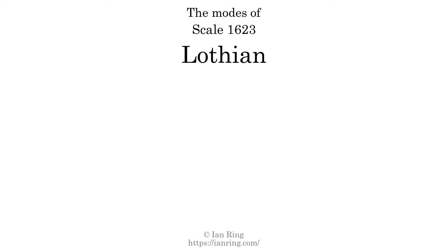Here is a Hamiltonian path of parsimonious voice leading that uses all the triads. This scale has 7 modes. The first mode is itself. The second mode is scale 2859, also known as Phrykrian.